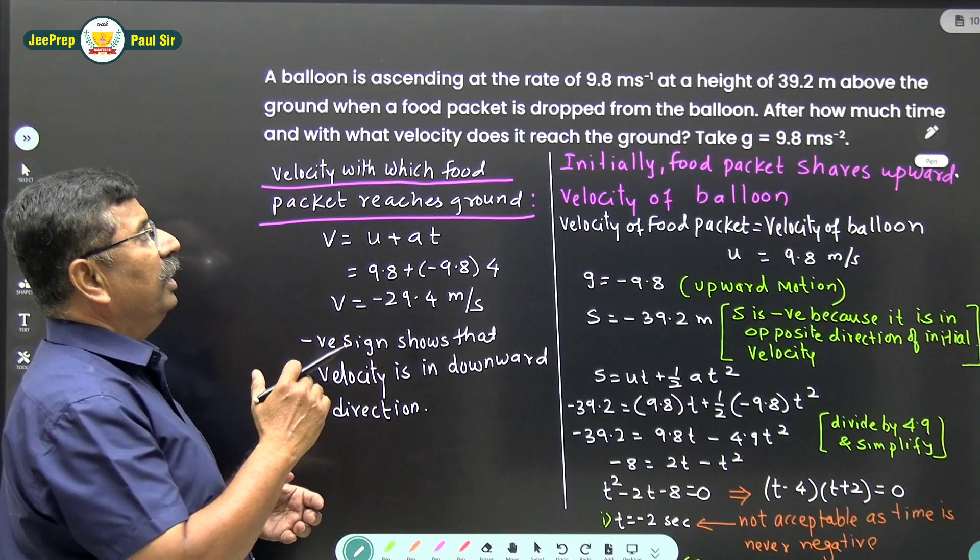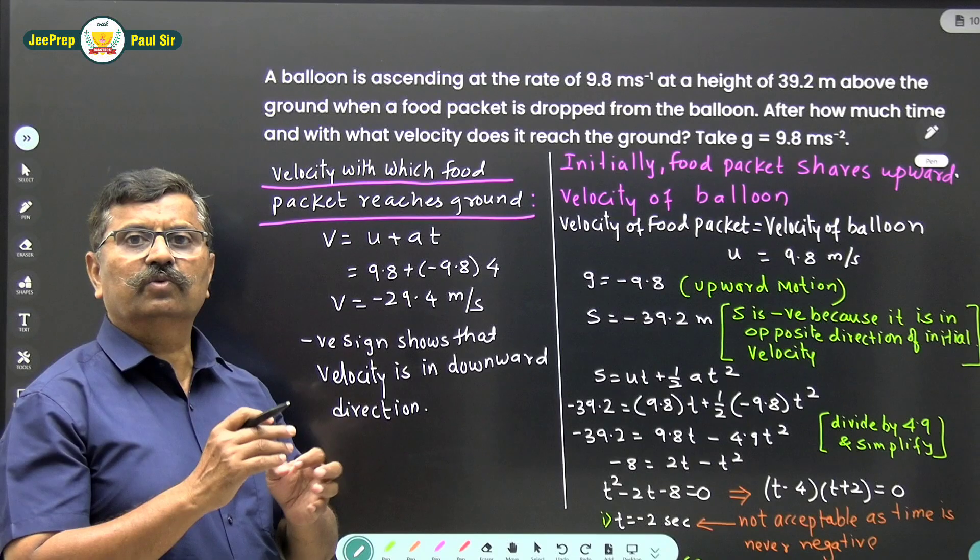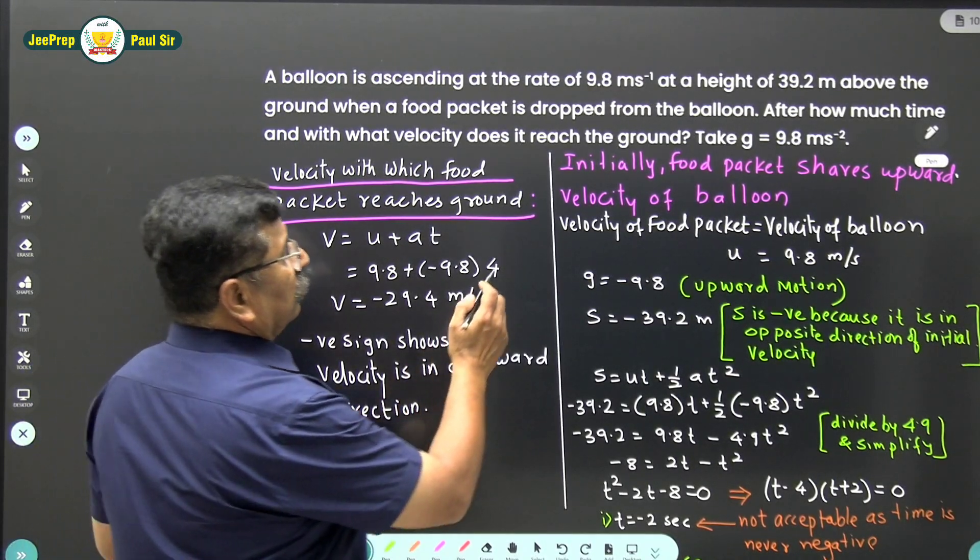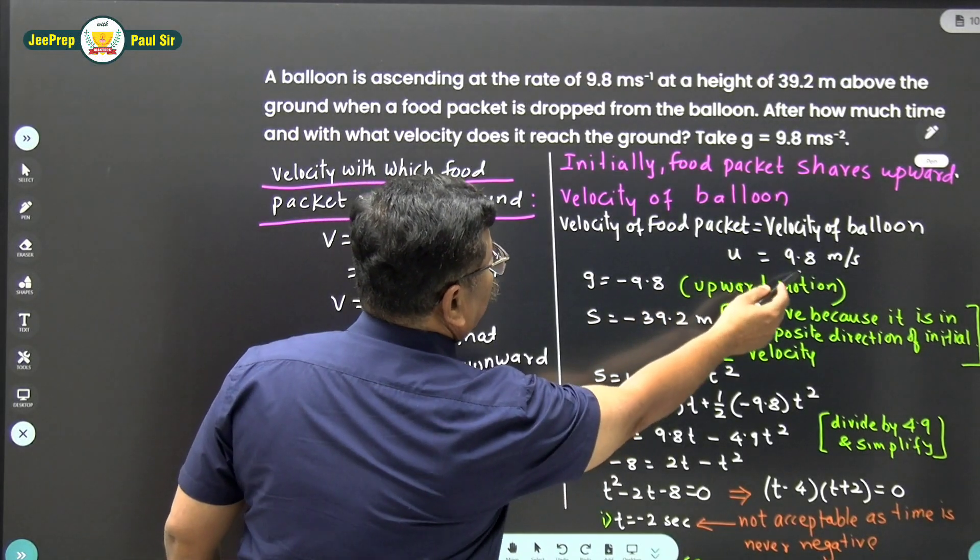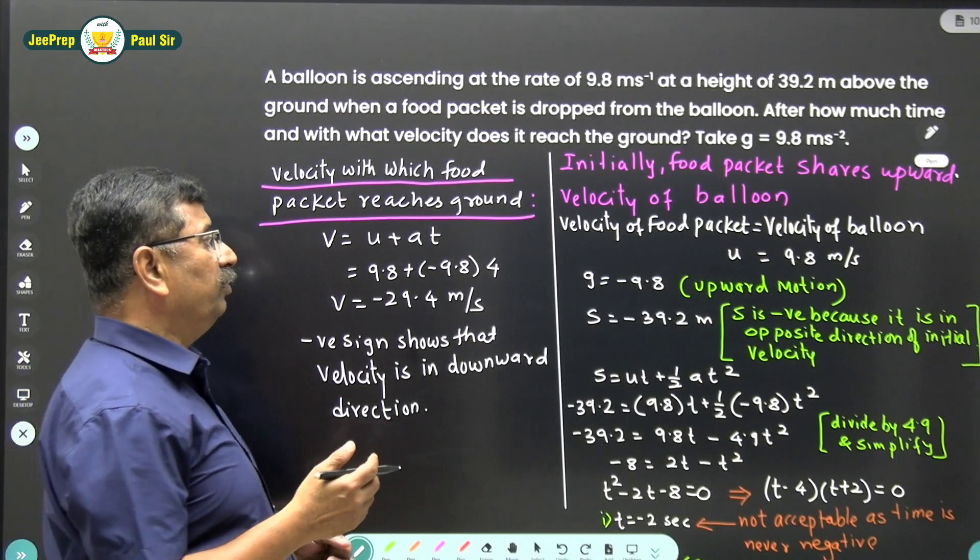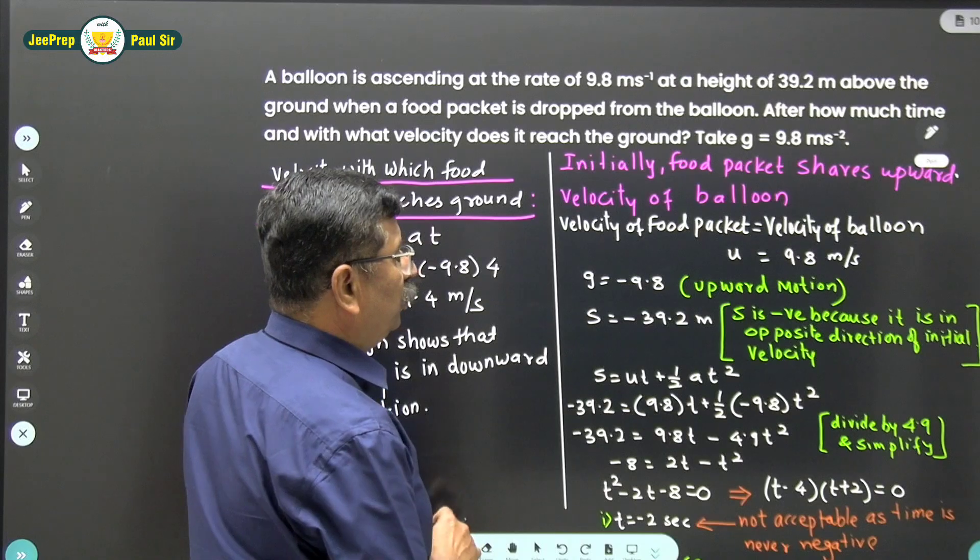As the balloon drops the food packet, the initial velocity of the food packet equals the velocity of the balloon. So u equals 9.8 meter per second. As it is upward motion, g equals minus 9.8 and s equals minus 39.2 meter.